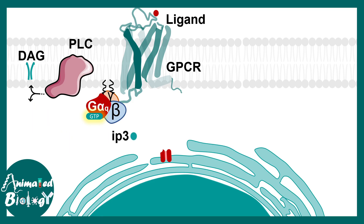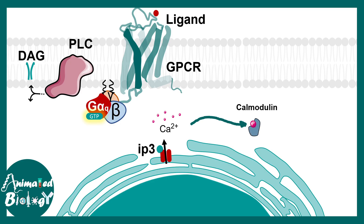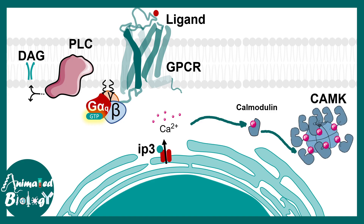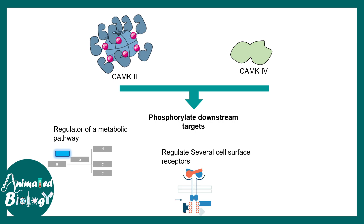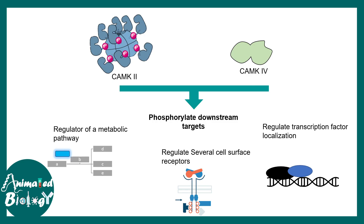IP3 can diffuse into the cytoplasm and bind to IP3 receptors on the endoplasmic reticulum, leading to calcium influx into the cytoplasm. Cytosolic calcium levels go up and this change is sensed by molecules like calmodulin. Calmodulin binds to calmodulin kinase, which leads to phosphorylation of several downstream targets — many of which are regulators of metabolic pathways, some are cell surface receptors, and some are transcription factors that upon phosphorylation may translocate into the nucleus to bring about the cellular effects of GαQ signaling.